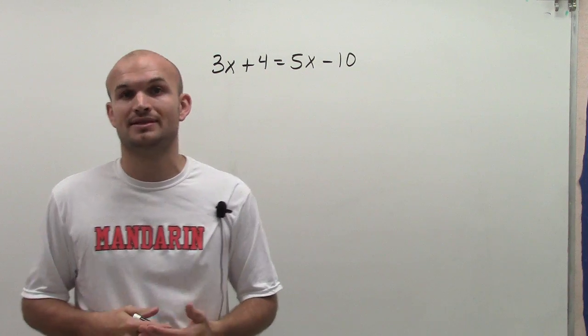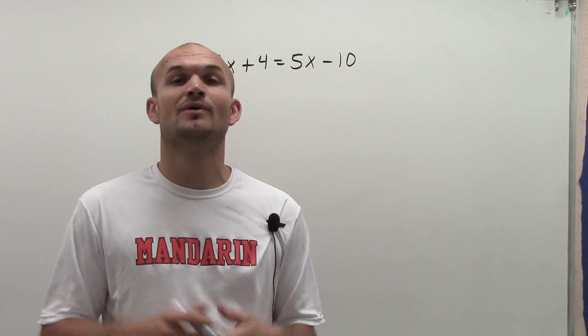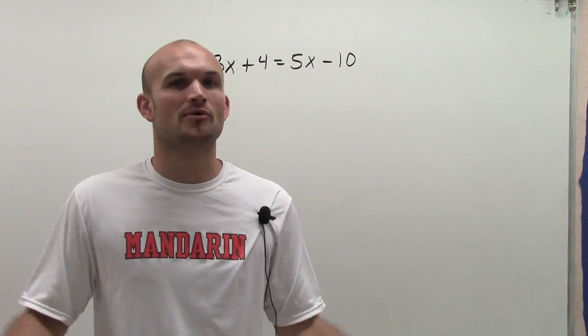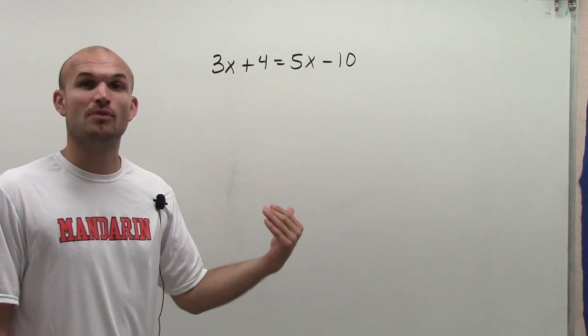The reason being, I don't like dealing with negative numbers, because a negative number is just an extra step that you have to do. And it just means more room for making mistakes. So I always like to get rid of the variable that's the smallest in value.